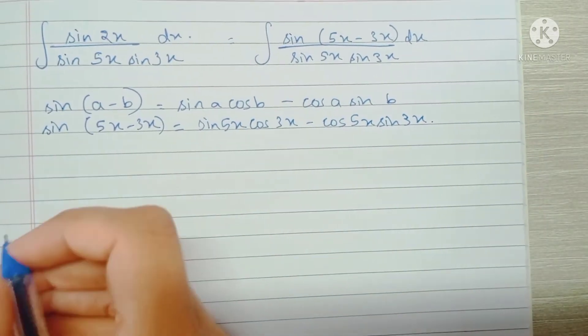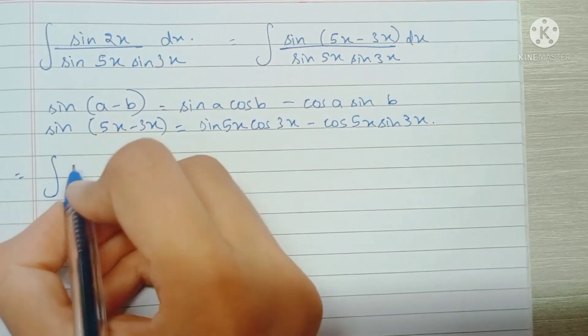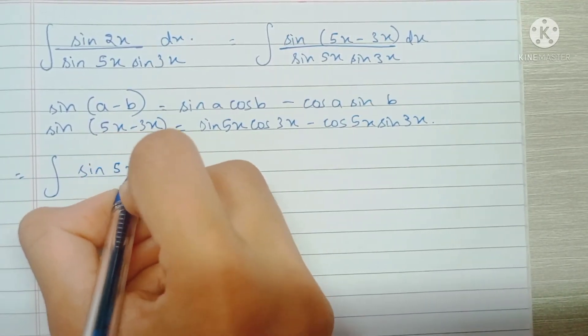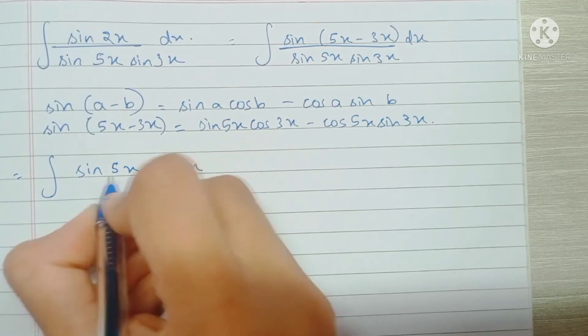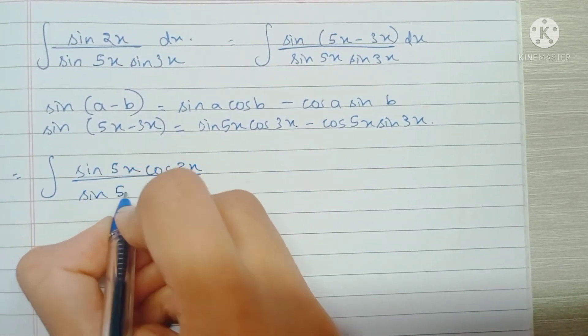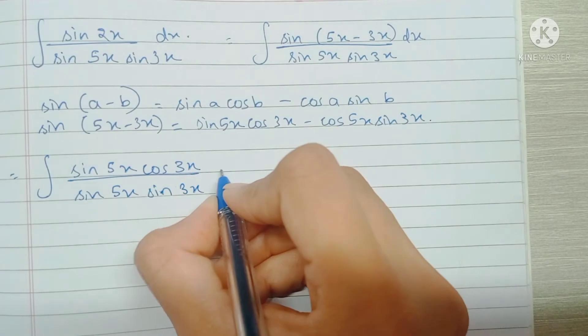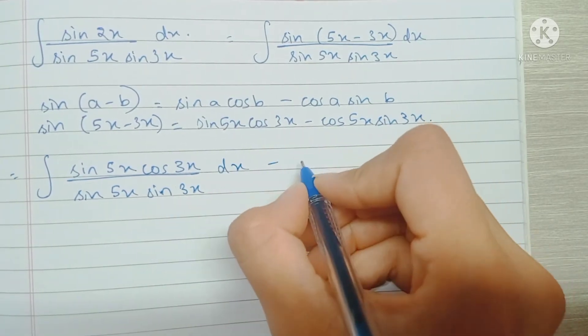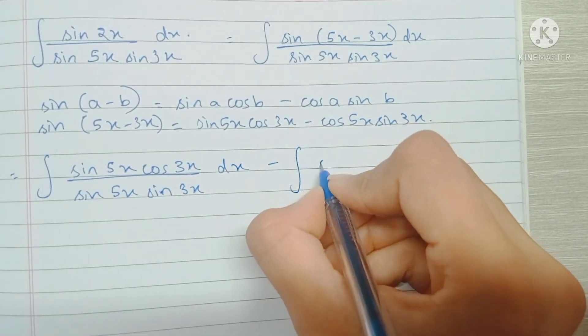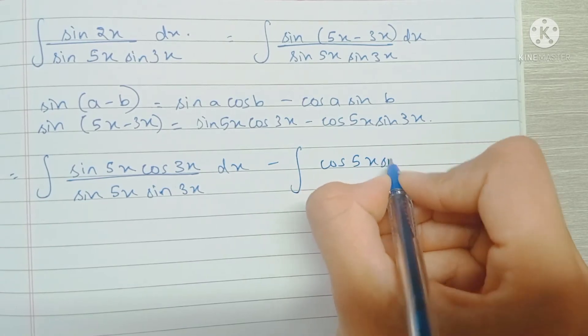And we write it as two separate fractions in the integral. The first one being sine 5x cos 3x upon sine 5x sine 3x, and the second one being minus the integral of cos 5x sine 3x upon sine 5x sine 3x.